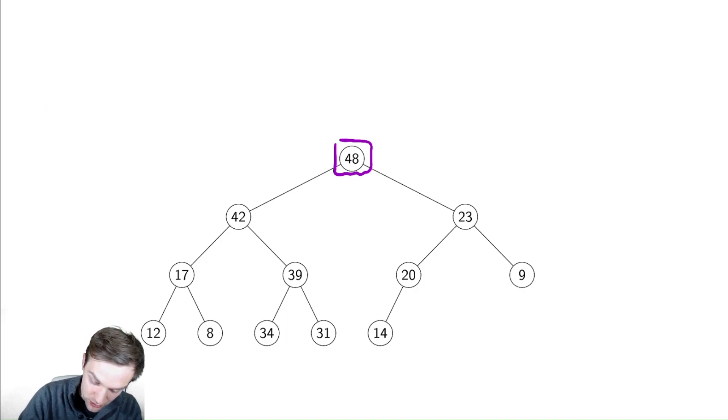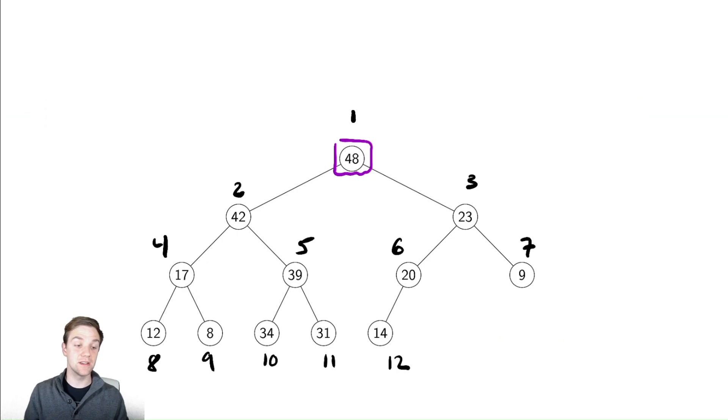So we will guarantee this and that allows us to number these in a very convenient way. If I call the root of this tree location 1 and then this location 2 and this location 3, 4, 5, 6, 7, 8, 9, 10, 11, and 12, then this is a very convenient way to number this and we will actually represent this as an array.